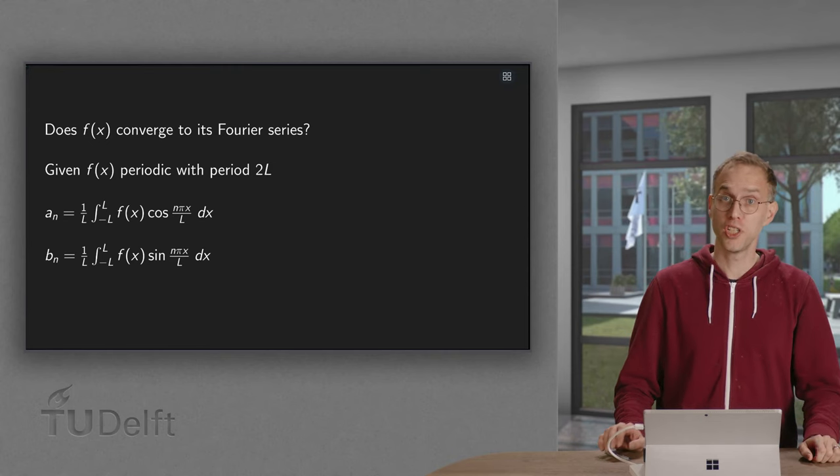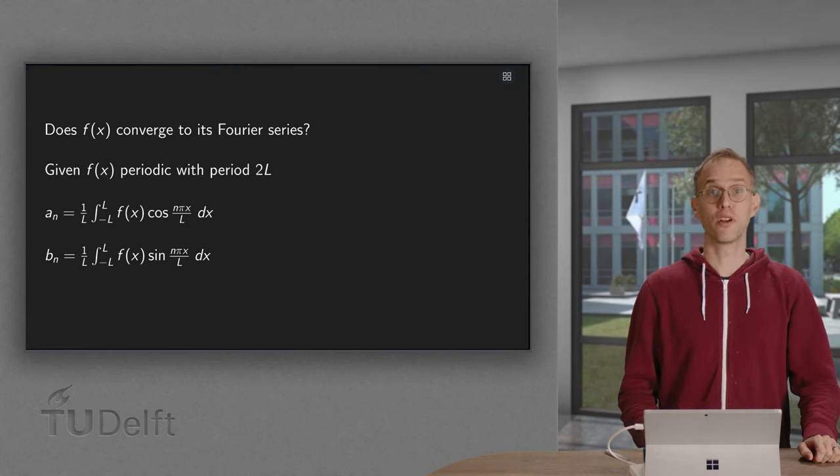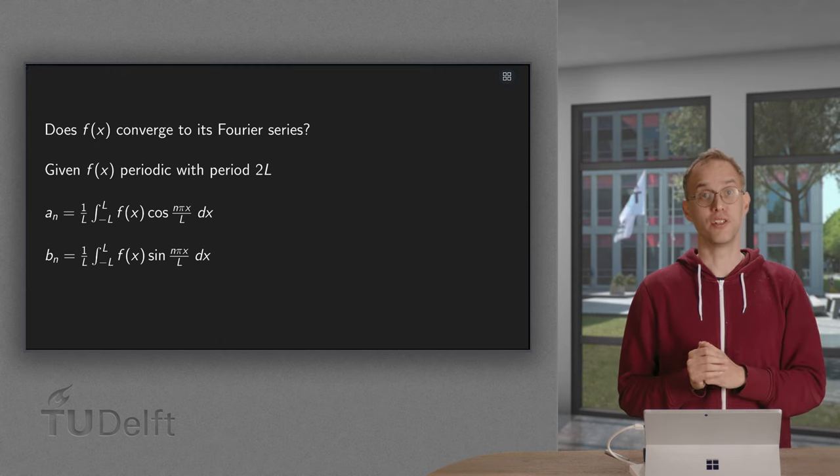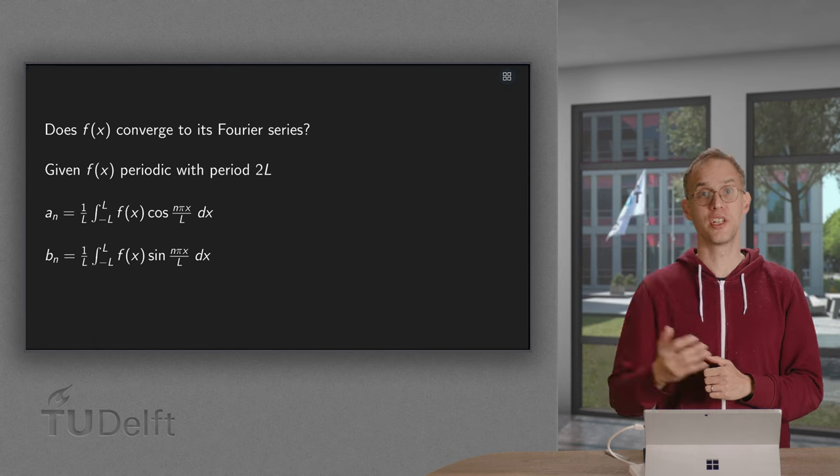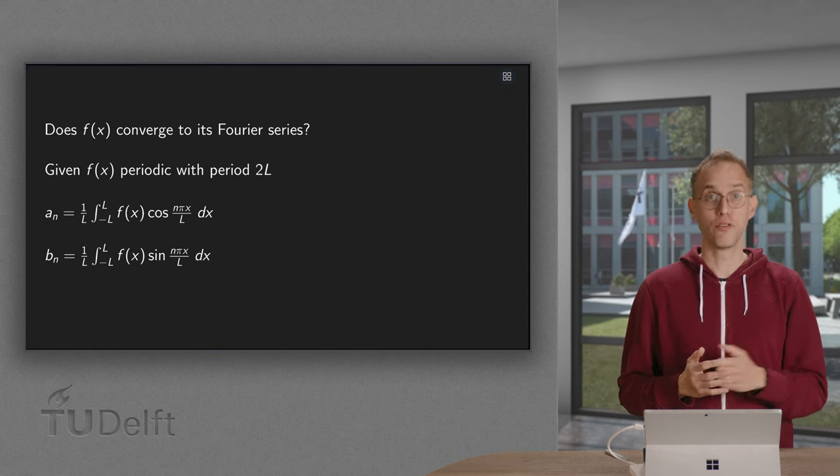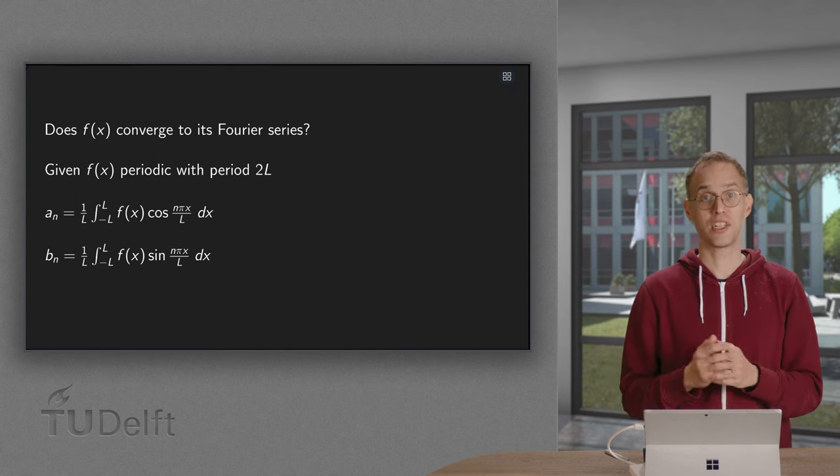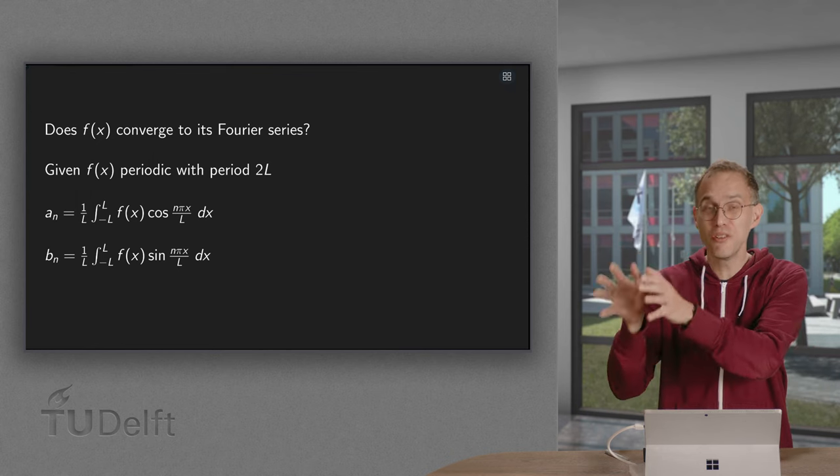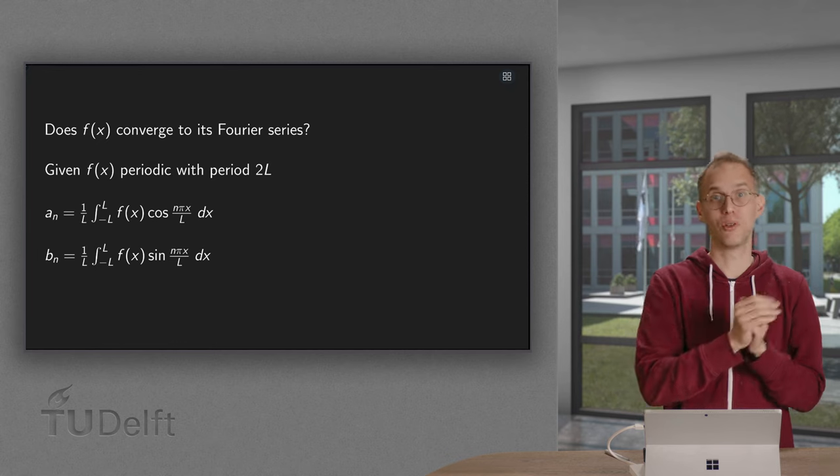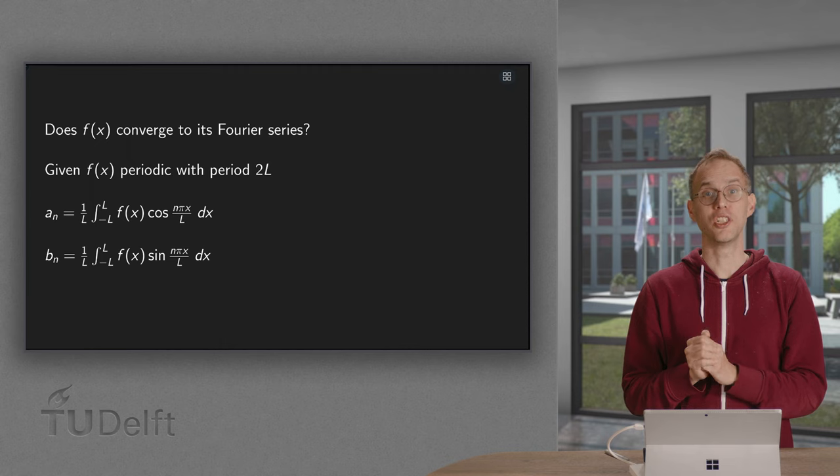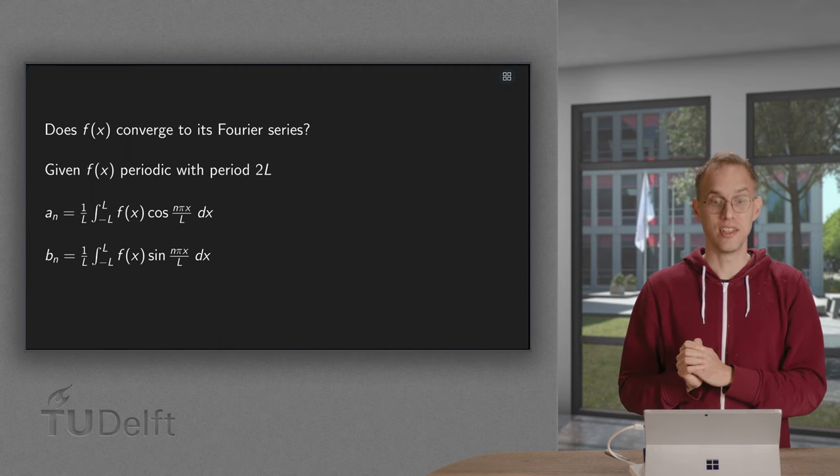If you have a periodic function, you can compute Fourier coefficients a_n and b_n. With these coefficients, we can compute Fourier series. If the series converges, it converges to some periodic function f̂(x). But is this new function f̂(x) equal to our original f(x)? And under which conditions? That is what you will see in this video.